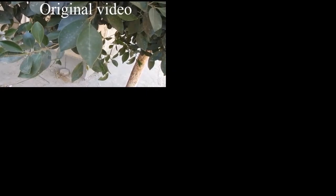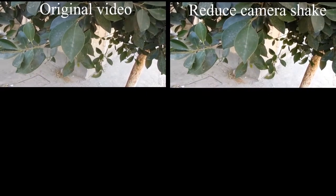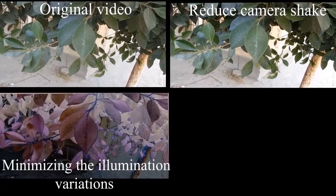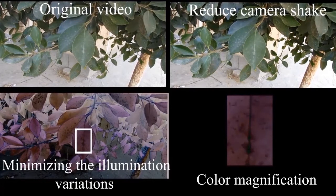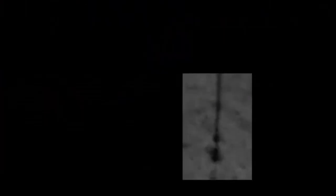Firstly, we stabilize the recorded video to reduce the camera shake. Then, we utilize illumination variations. Lastly, we apply the color magnification process to the region of interest of the plant to magnify the changes to its color.